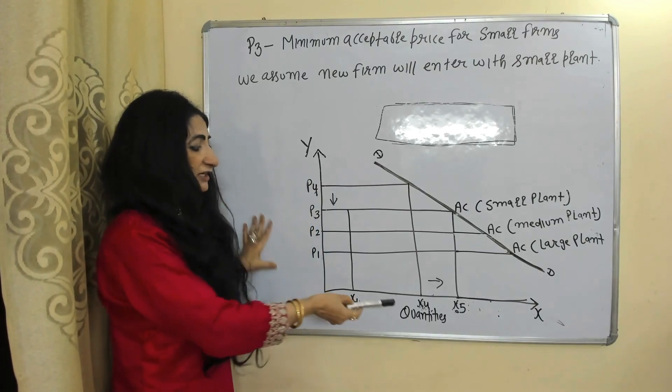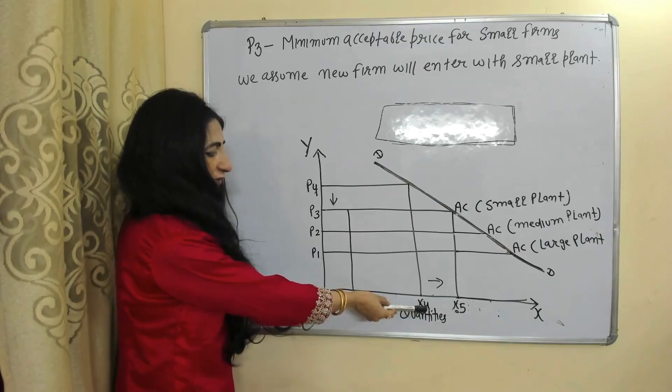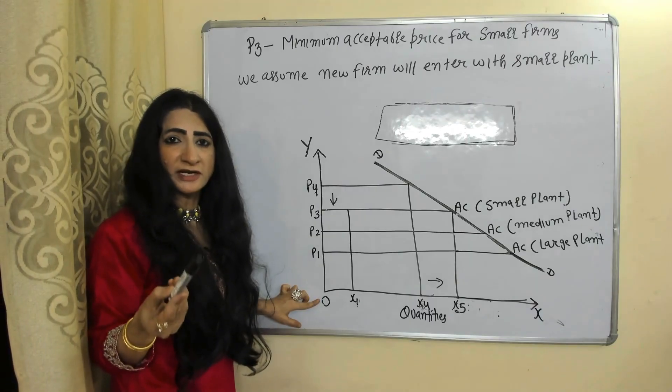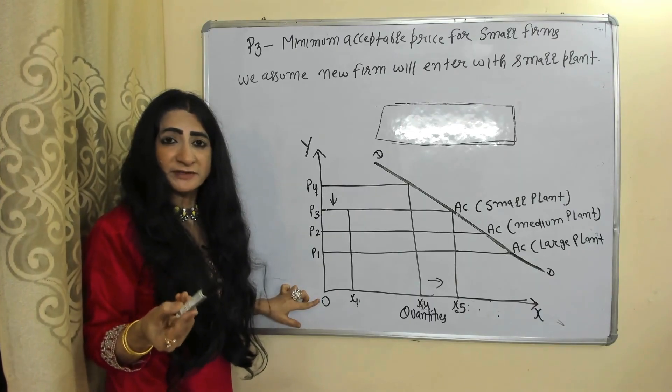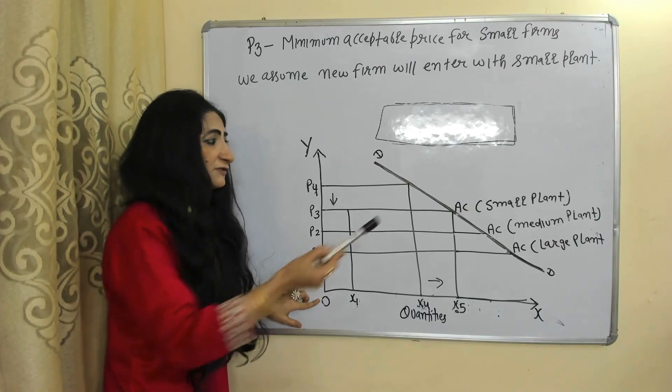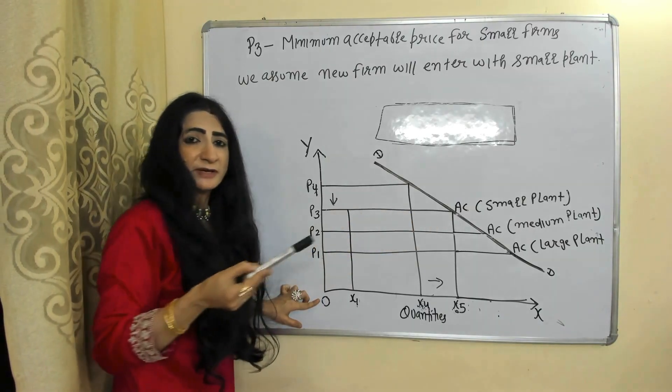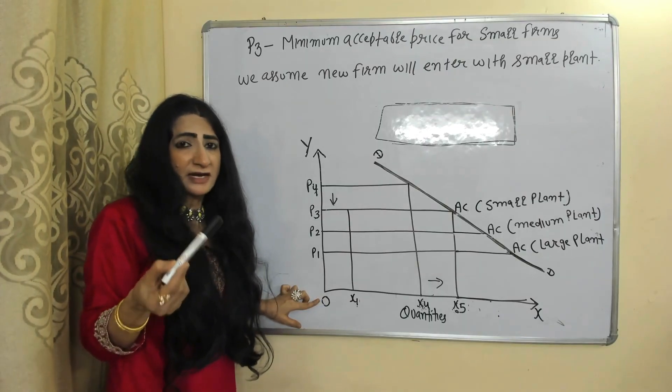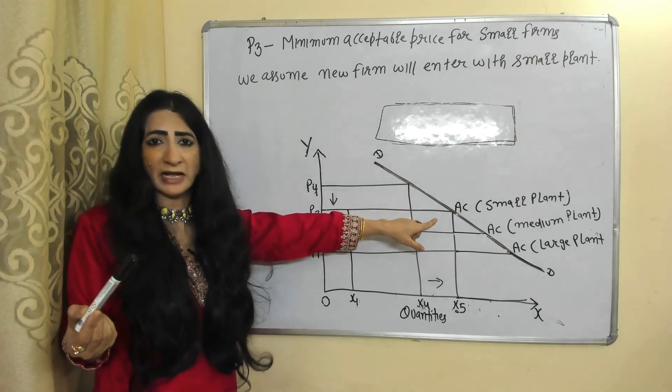Initially, leader firm kept X4 output and P4 price. This is a strategy for the leader firm and the leader firm deliberately made this strategy for a small plant because the leader knows if any new firm will enter, it must have a small plant.